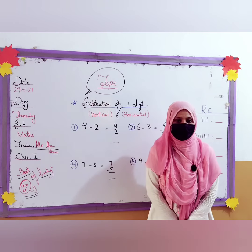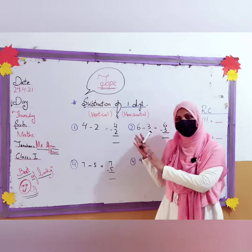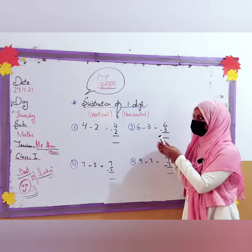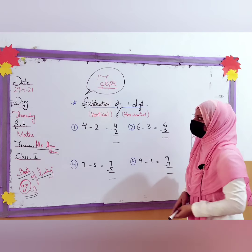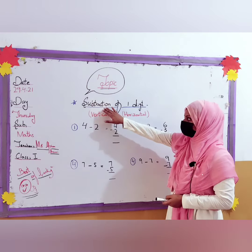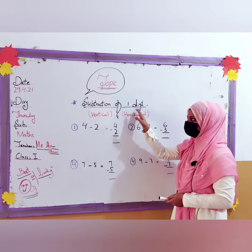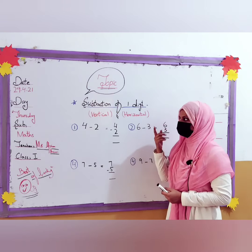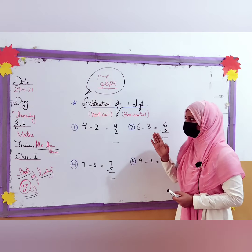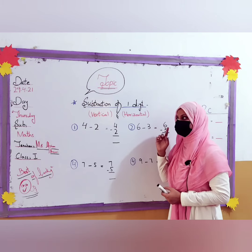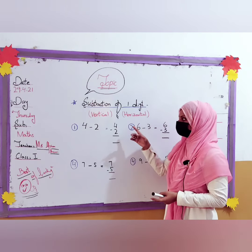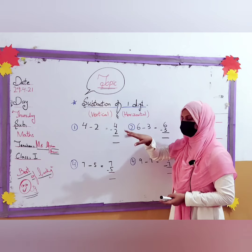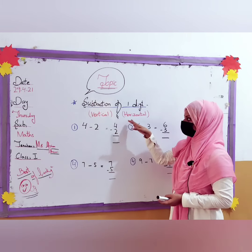So look at the board — the heading and topic is subtraction of one digit. You have done simple one-digit subtraction previously. But over here I am adding two more things: vertical and horizontal.